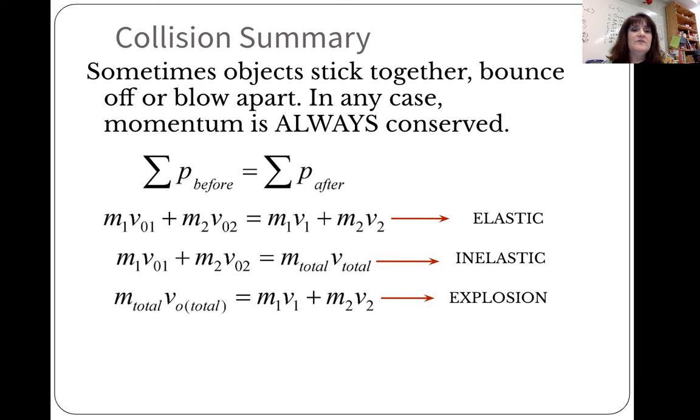So, here's a summary that you can put on your formula sheet. Sometimes objects stick together, bounce off, or blow apart. In any case, momentum is always conserved. So, your base equation is momentum before is equal to momentum after. An elastic general equation is M1 V naught 1 plus M2 V naught 2 is equal to M1 V1 plus M2 V2. Inelastic is M1 V naught 1 plus M2 V naught 2 is equal to the total mass times the total velocity. And in an explosion, we start with the totals and end with mass of each times velocity of each individual object. You'll be doing lots of problems today in class. Thanks for watching.